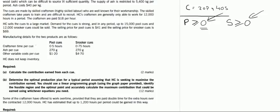These two inequalities which define that production cannot be negative are known as non-negativity constraints. After identifying these two, let us move on to the third paragraph, which has the easier constraints.